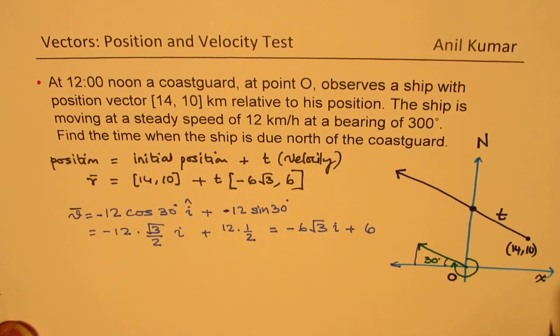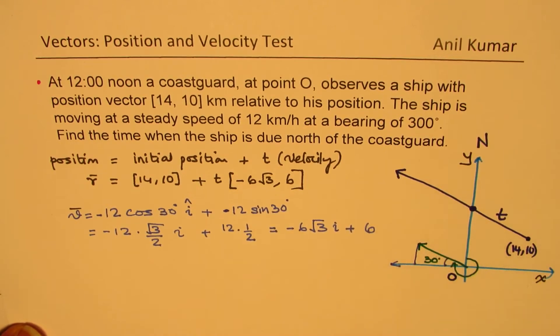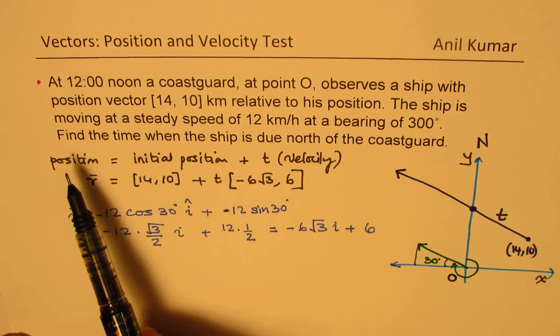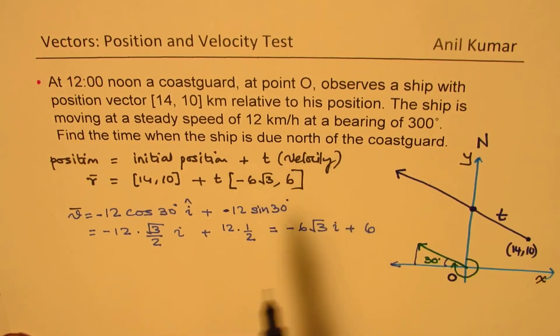Perfect. So we wrote the velocity in terms of I and J components. Now, we have a plot here. It is X and Y, where displacement is clearly seen. Now the question is, find the time when ship is due north.